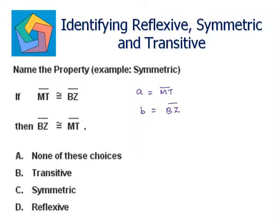So I can say if a equals b, then b equals a. This property is known as the symmetric property, which is the answer in part C.